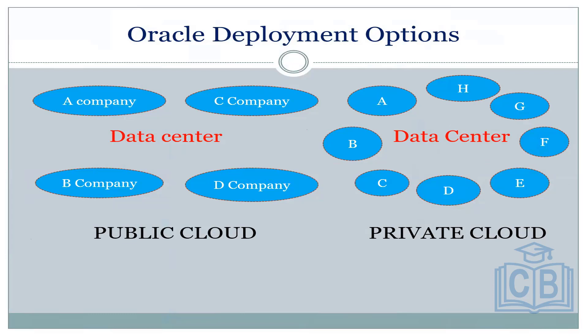Suppose Company A, Company B, Company C and Company D are there. In public cloud, Company A cannot see Company B's data, Company B cannot see Company C's data and Company C cannot see Company D's data. And private cloud is different — sorry, I'm saying the opposite.